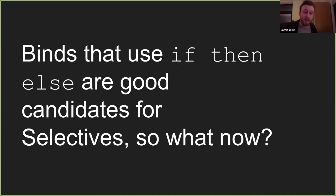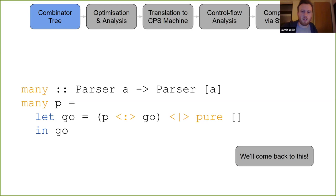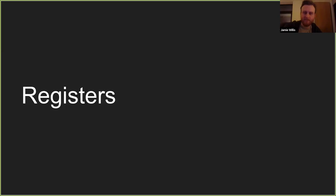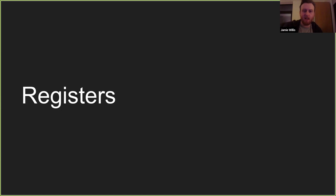Binds that use if-then-else are the ones we use selectives for — whenever we have if statements or cases, selectives probably handle them. But I said earlier we've lost the ability to do recursion where the argument changes. Now's the time to address that. Parsley has something legitimately new — I haven't seen it used like this anywhere else — that will encapsulate every other behavior we've lost from bind.